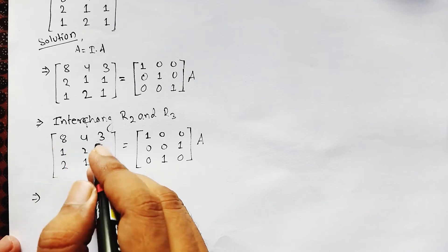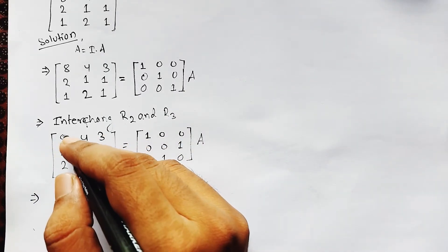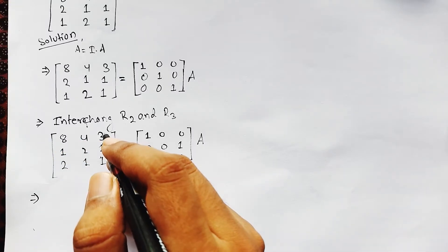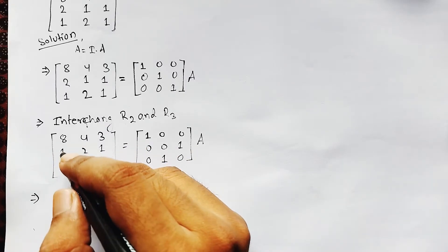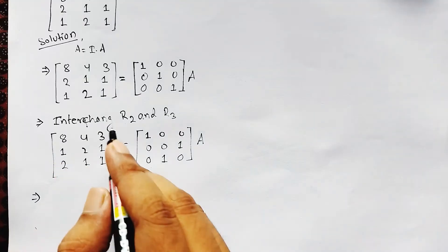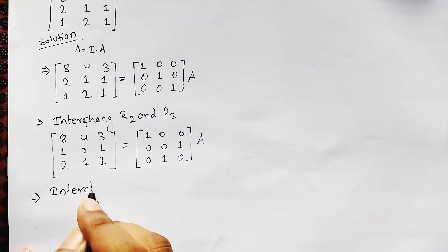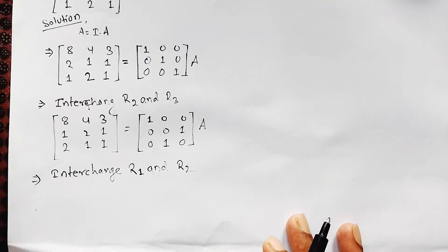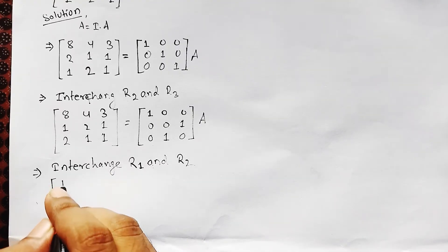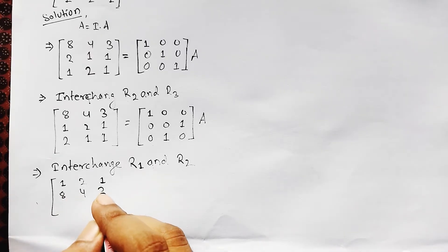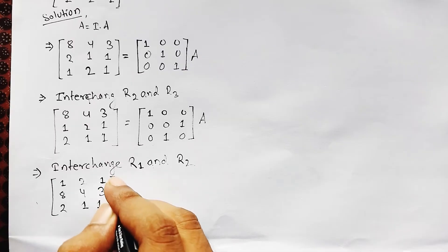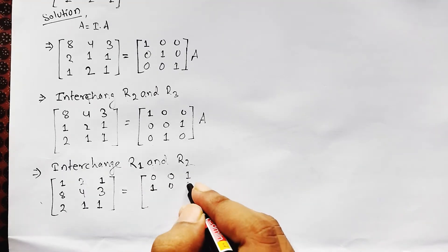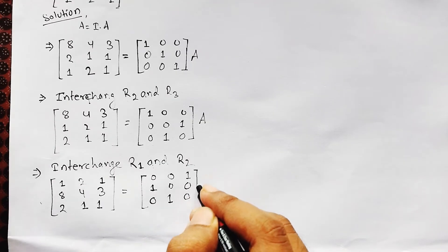Next, we interchange R1 and R2, because our main target is to make element a₁₁ equal to unity. On interchanging R1 and R2, the matrix becomes [1,2,1; 8,4,3; 2,1,1], and the identity side becomes [0,0,1; 1,0,0; 0,1,0], multiplied by A. Now our first element is unity.